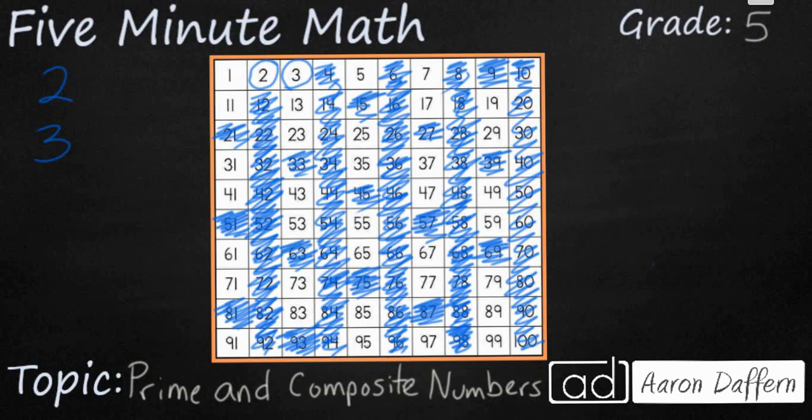Now that we've finished getting rid of all of the multiples of two and three, let's look at our next prime number. Five. Five is prime, because the only way to get five is one times five. But that means every multiple of five can be divided by five. All of our tens are already taken care of because they're even, but we can go ahead and get rid of all of our fives.